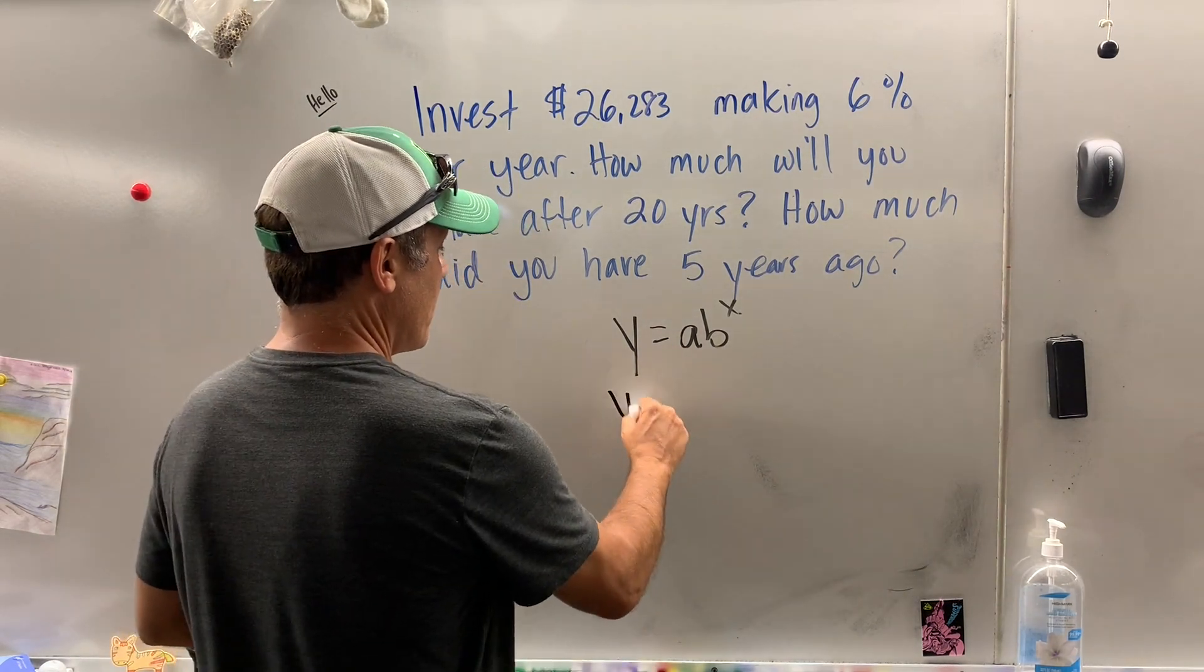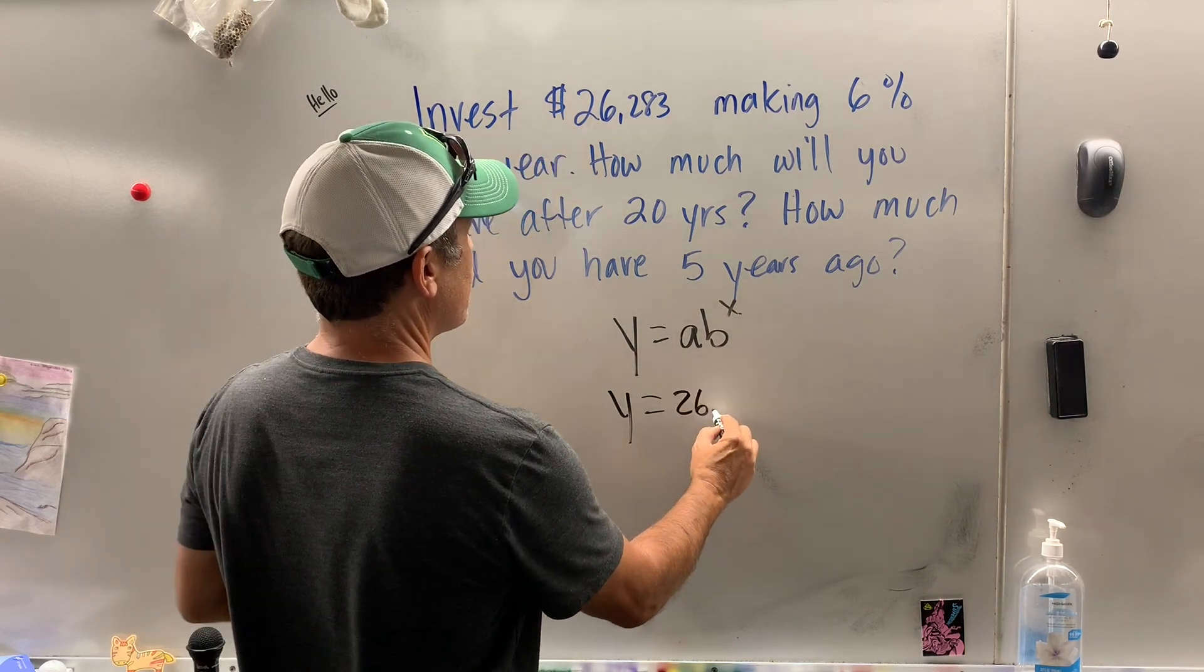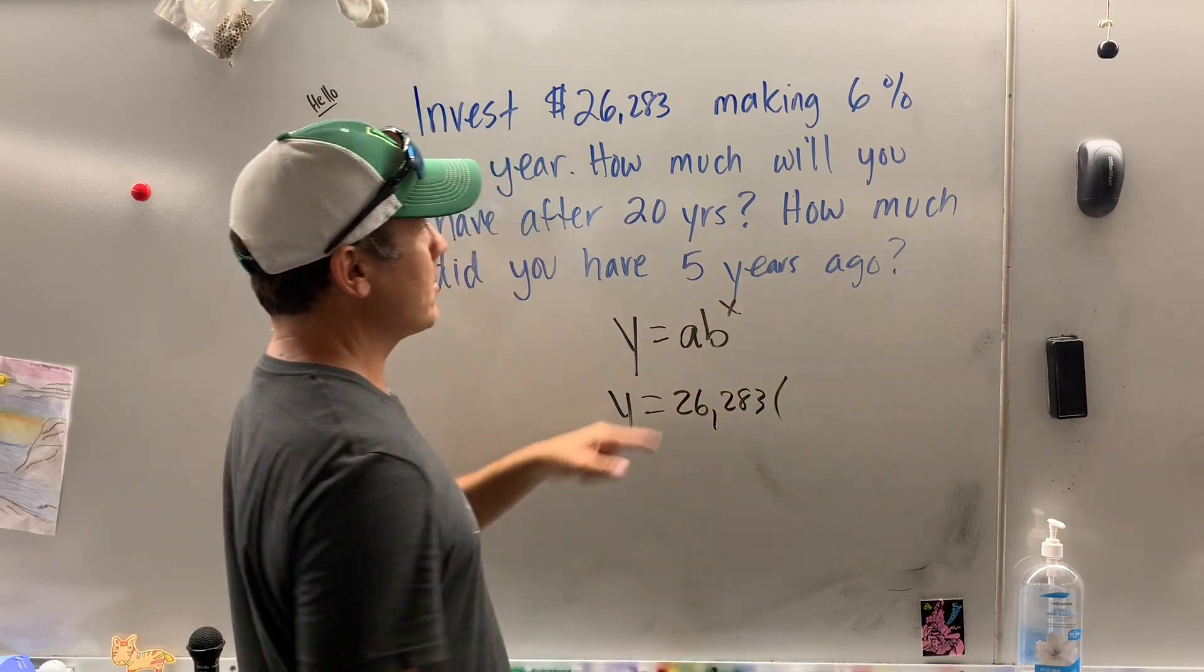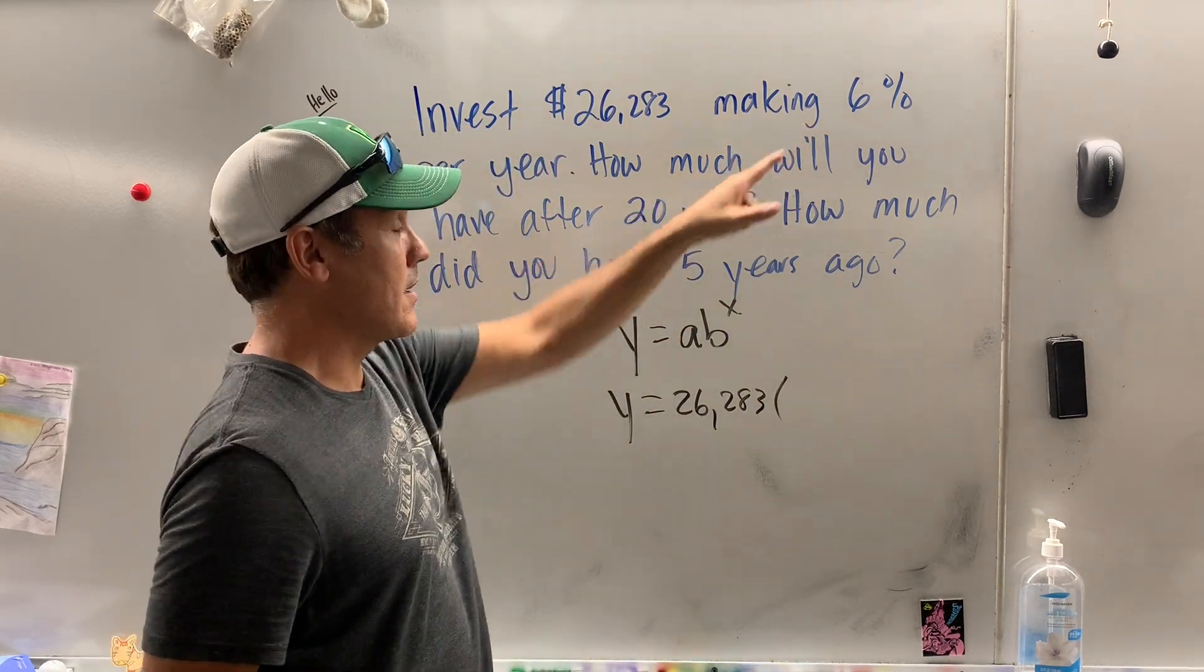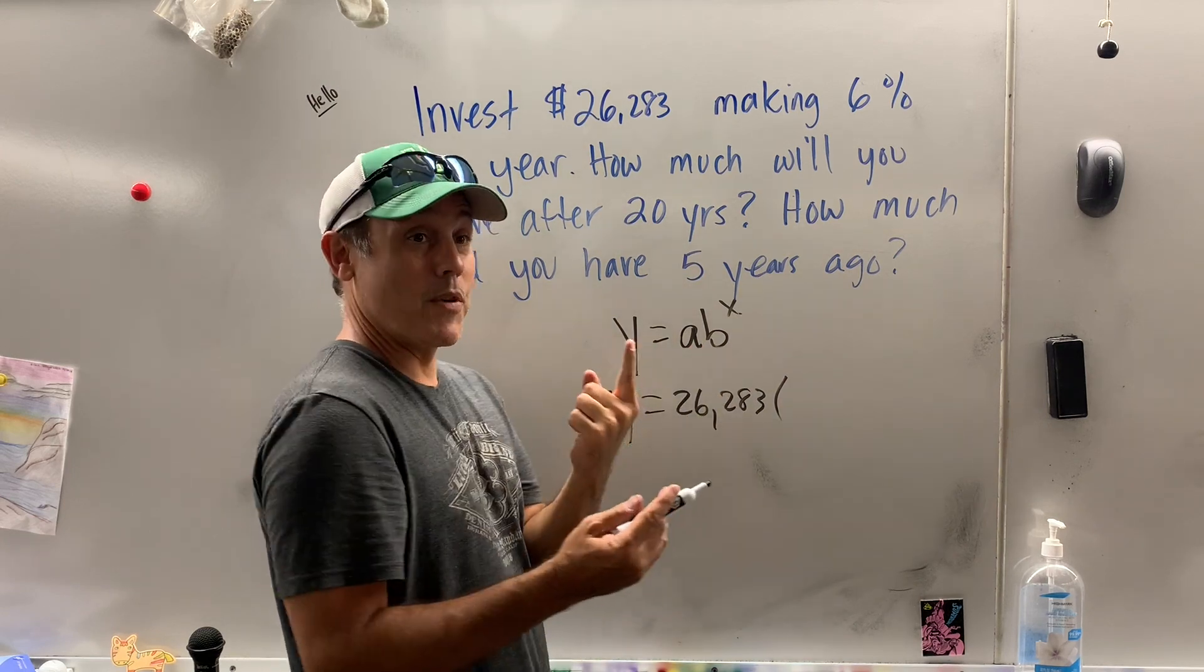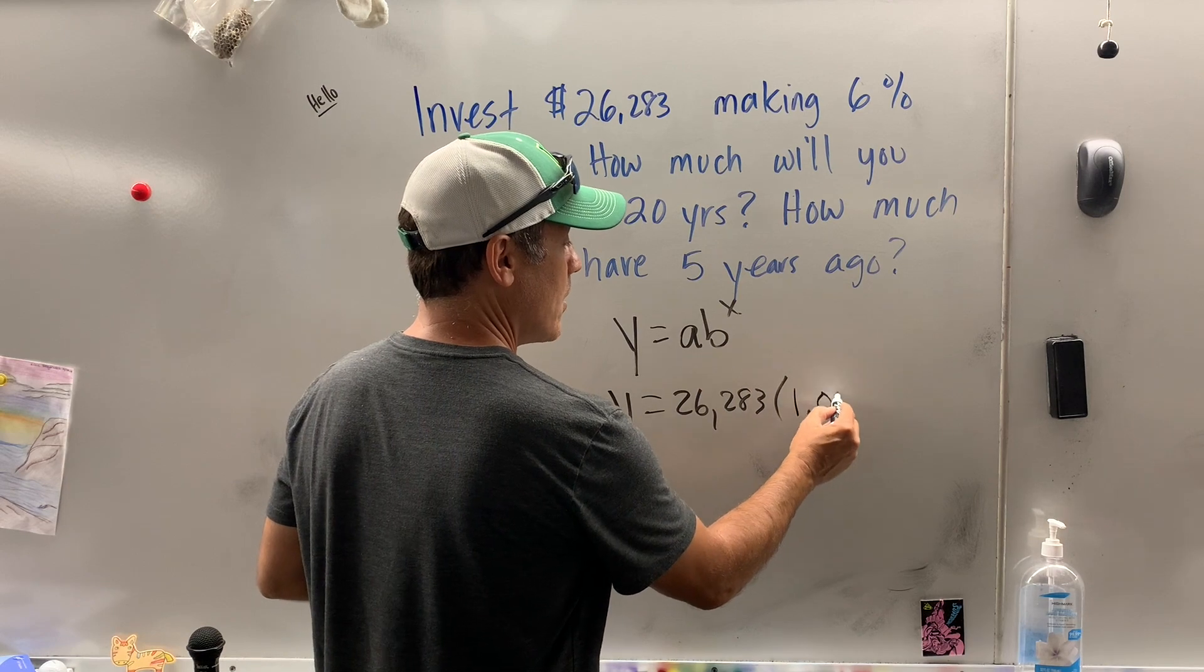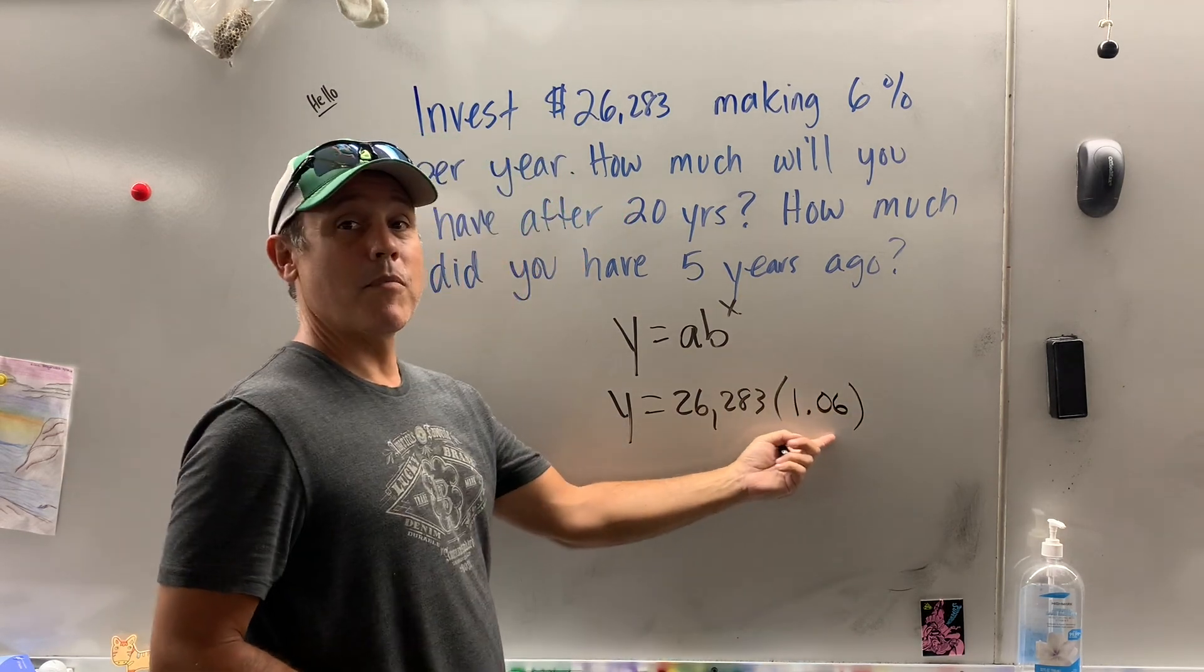So Y equals, my investment right now is at $26,283, my multiplier is 6%. So if I'm making 6%, I'm starting with what I have, which is 1, and how do you write 6%? 0.06. So this is my multiplier.